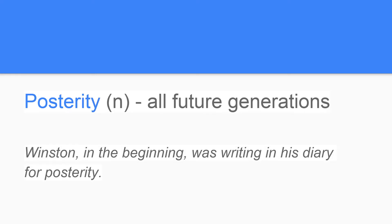Word number 7 is posterity. Posterity is a noun, meaning all future generations. For example, in 1984, Winston, in the beginning of the novel, was writing in his diary for posterity.